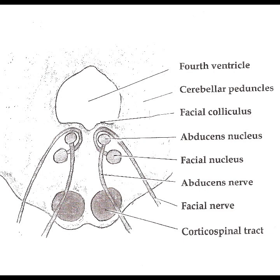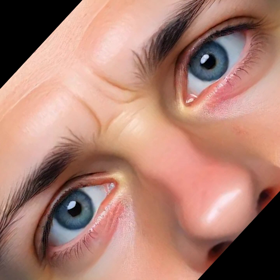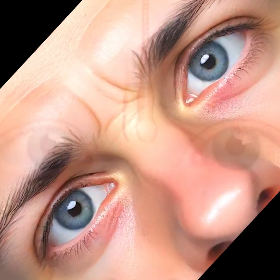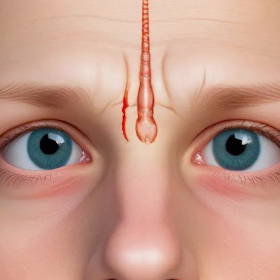Nuclear Lesions of the Abducens Nerve. Damage to the abducens nucleus does not produce an isolated sixth nerve palsy, but rather a horizontal gaze palsy affecting both eyes simultaneously. The abducens nucleus contains two types of cells: motor neurons that control the lateral rectus muscle on the same side, and interneurons that cross the midline and connect to the contralateral oculomotor nucleus, which controls the medial rectus of the opposite eye. Conjugate gaze is mediated by the medial longitudinal fasciculus (MLF), connecting the abducens, trochlear, and oculomotor nuclei into a single functional unit. Lesions of the abducens nucleus and the MLF produce notable sixth nerve problems, most notably internuclear ophthalmoplegia (INO).